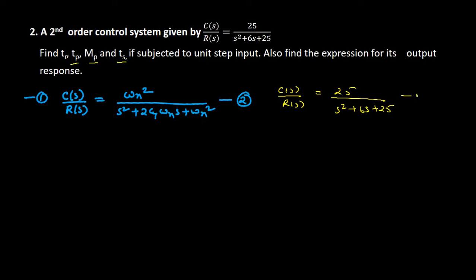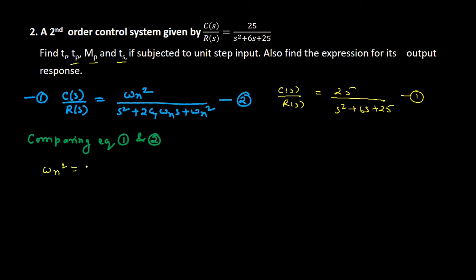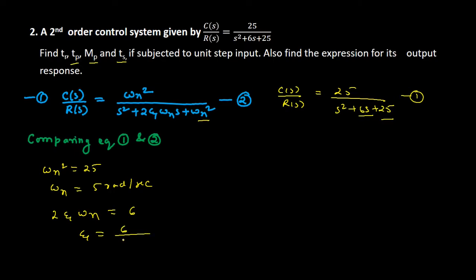We will compare equation number one with the standard equation (equation number two). Then we get omega_n squared equal to 25, therefore the natural frequency of oscillations omega_n equals 5 radians per second. Again comparing both equations, we get 2·zeta·omega_n equal to 6, therefore zeta equals 6 divided by 2 times omega_n. Substituting omega_n equals 5, we get 6 divided by 10, which equals 0.6. So the damping ratio zeta is 0.6.